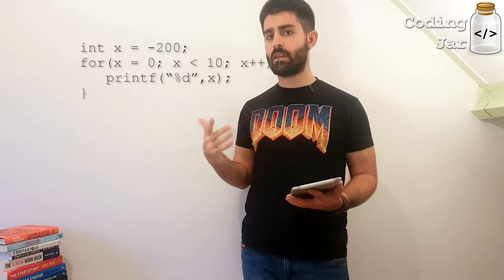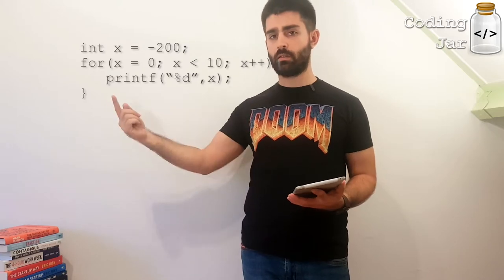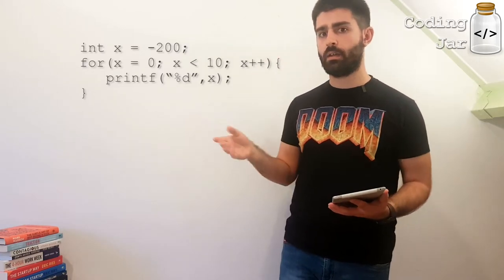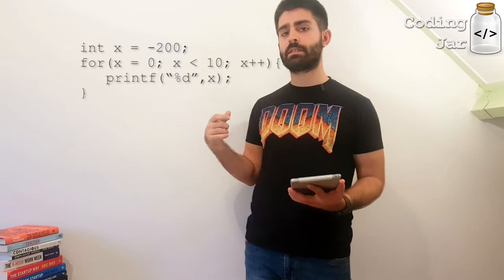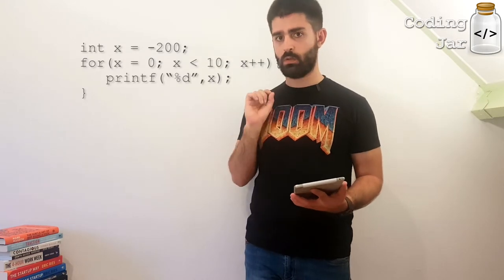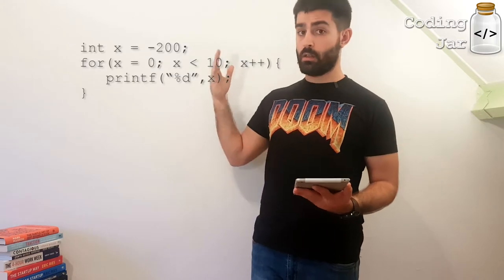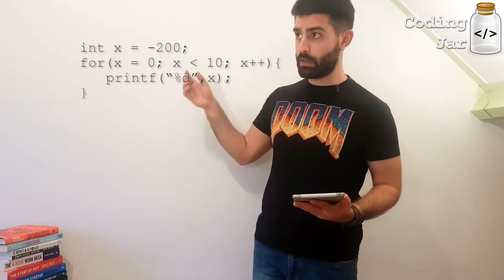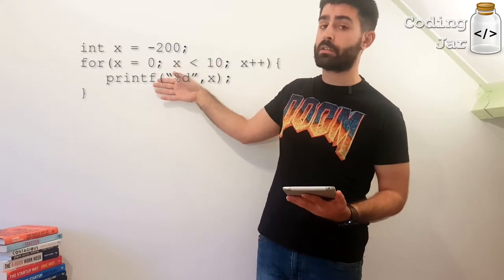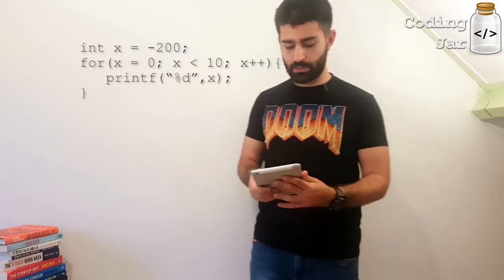X equals 9, is 9 less than 10? Yes. Print it. Increase x by 1. X equals 10, is x less than 10? No, it's 10. It's not less, it's equal to. This is why the for statement will stop being executed and the rest of the program will start being executed.